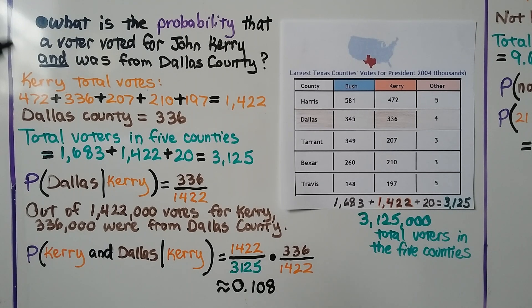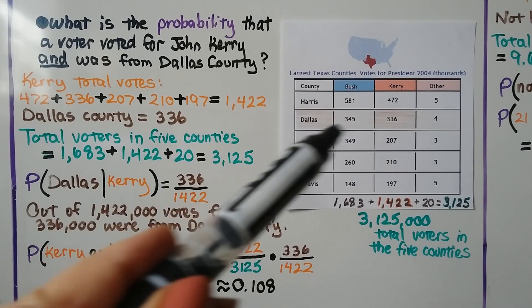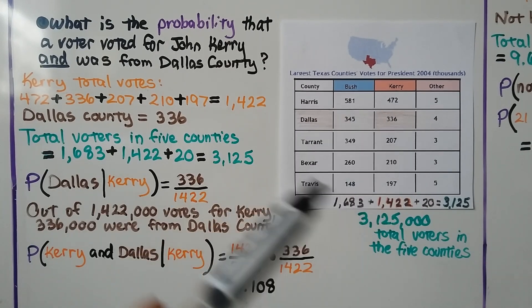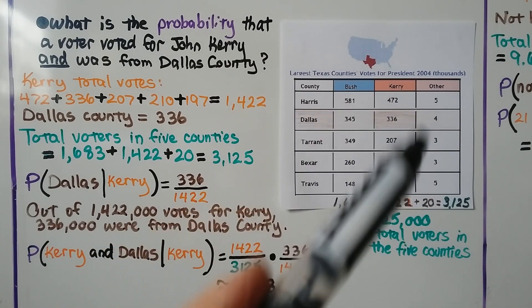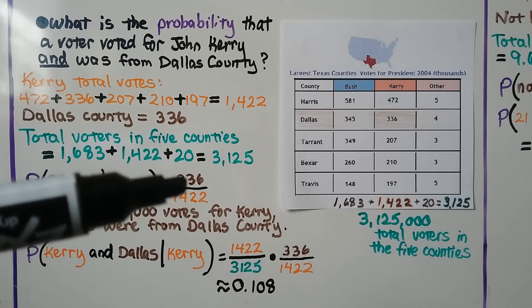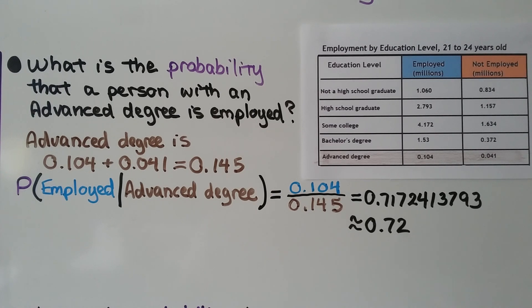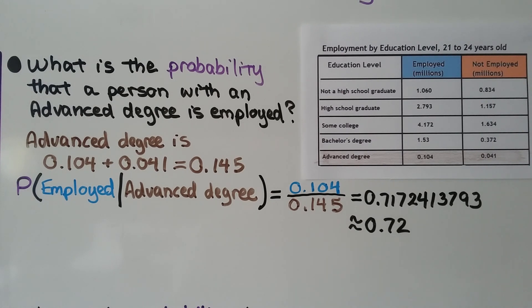Because it said John Kerry and was from Dallas County, we found the Kerry totals in his column, got the Dallas County totals for Kerry, totaled up all voters on the entire table, and multiplied. If you look at each of these as a template, you'll be able to solve another one from your textbook using these as the template.